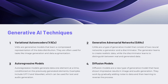Autoregressive models generate data one element at a time, conditioned on the previously generated elements. Examples include GPT-3 for text generation and WaveNet for audio generation. These models can capture long-range dependencies in the data and generate coherent, realistic outputs.